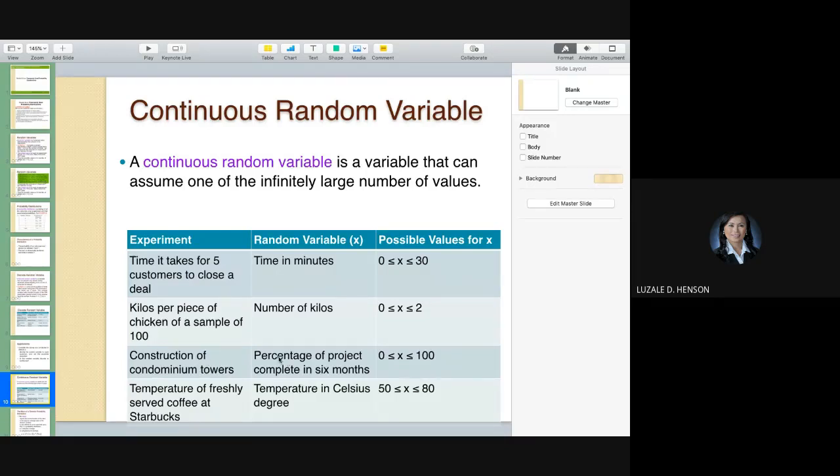Construction of condominium towers. Percentage of project completed in 6 months. So, maybe it could also be expressed in percentage, not only numbers. So, you could say from 0 to 100. There's no 101. So, maybe the outcome could be, or possible values of X could be, let's say, 85.6% completed in 6 months. Temperature of freshly served coffee at Starbucks. Temperature in Celsius degree. That's what you're interested in. So, from 50 to 80 Celsius degree. That's the possible values for X you want. And then, you test. You make a trial. Let's say, how many in a sample of one day. You'll check now what temperature is served to, let's say, a sample of 100 customers. In a continuous random variable.